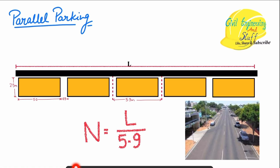The number of vehicles that can be parked along a curb length L — keeping a 0.9-meter spacing between vehicles — in parallel parking format is: N = L / 5.9. Here, 5 meters is the standard vehicle length plus 0.9 meters spacing. So N = L / 5.9 gives the number of vehicles that can be parked along a certain length of curb when vehicles are parked in a parallel format.